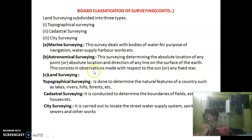This consists of observations made with respect to the sun or any fixed star on the surface. The absolute location is determined with respect to any heavenly body, meaning the sun or other fixed stars.